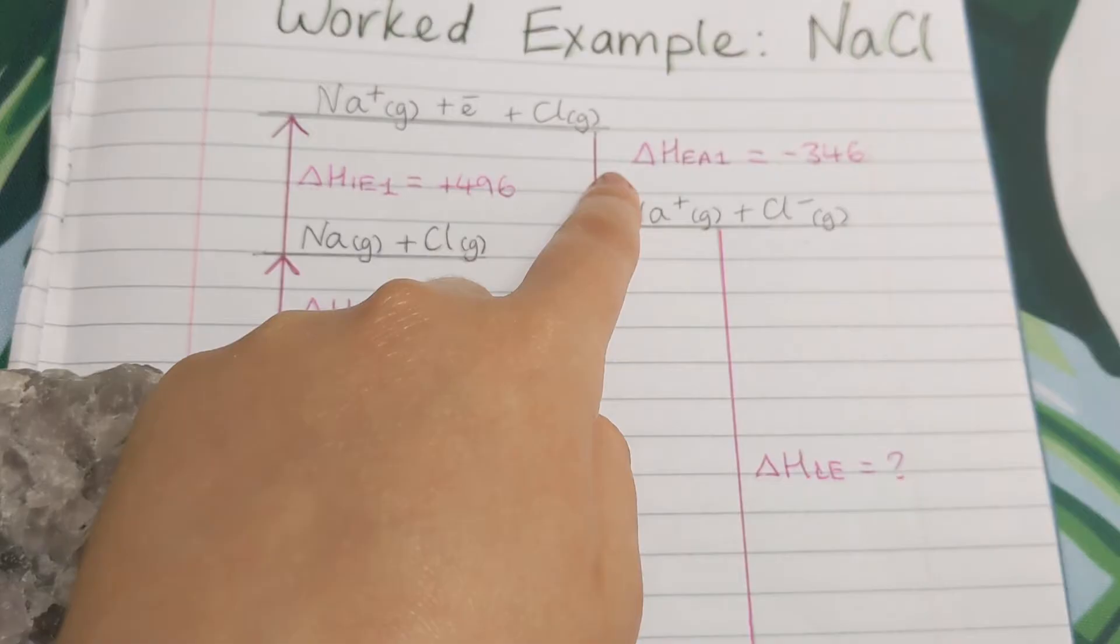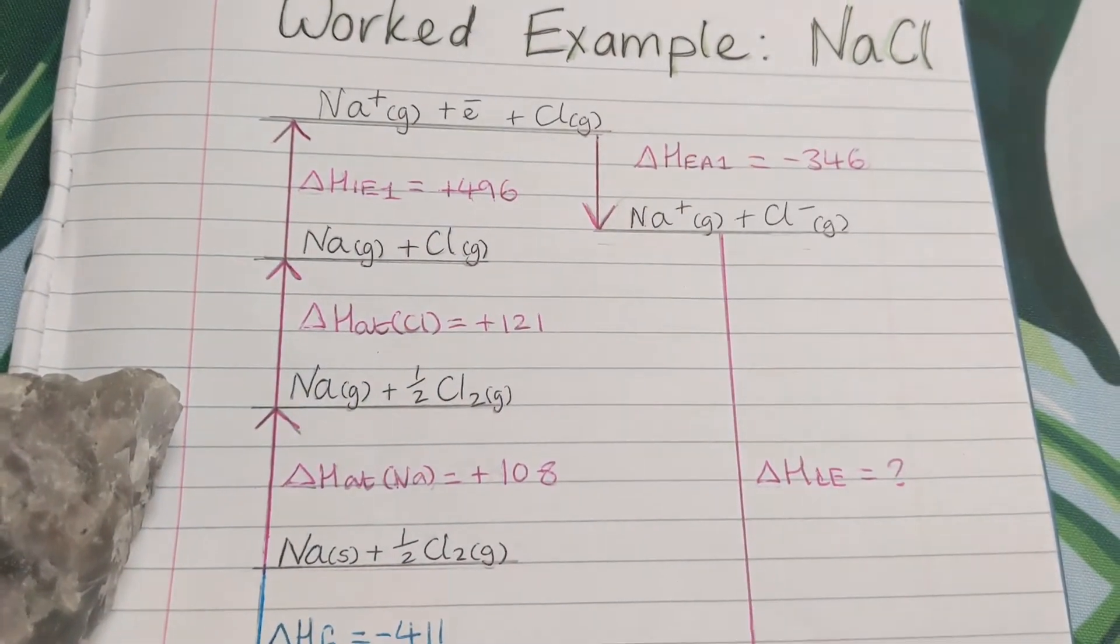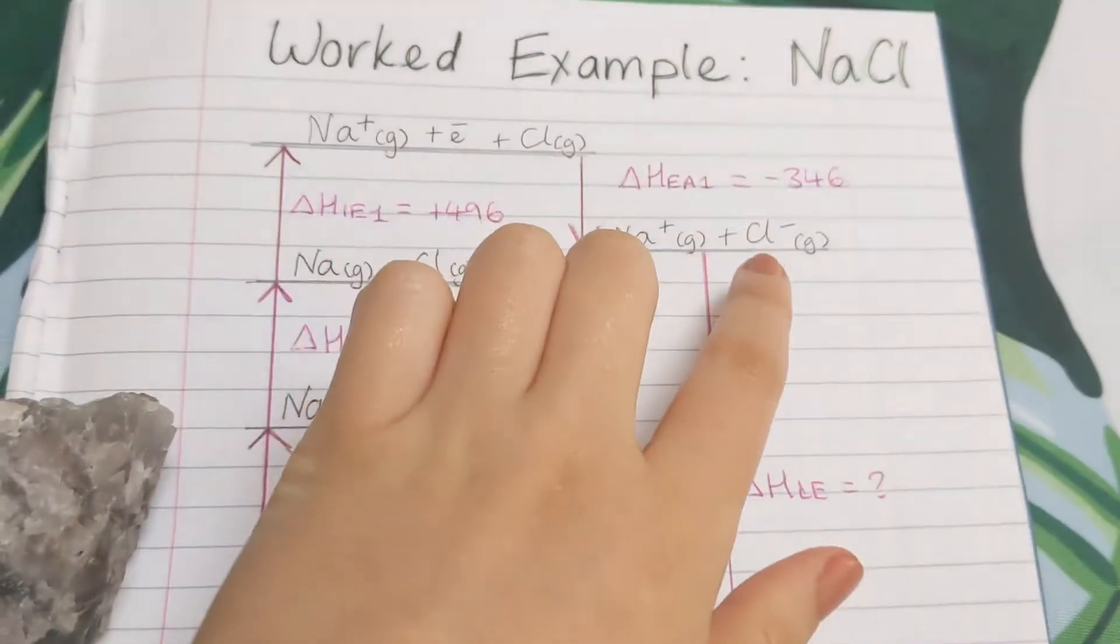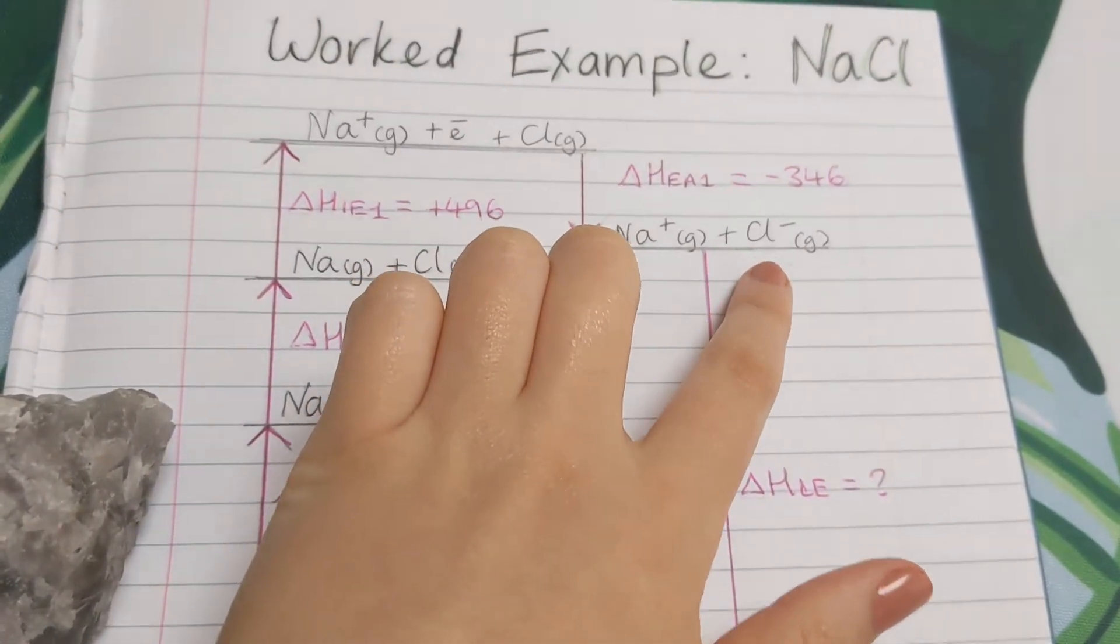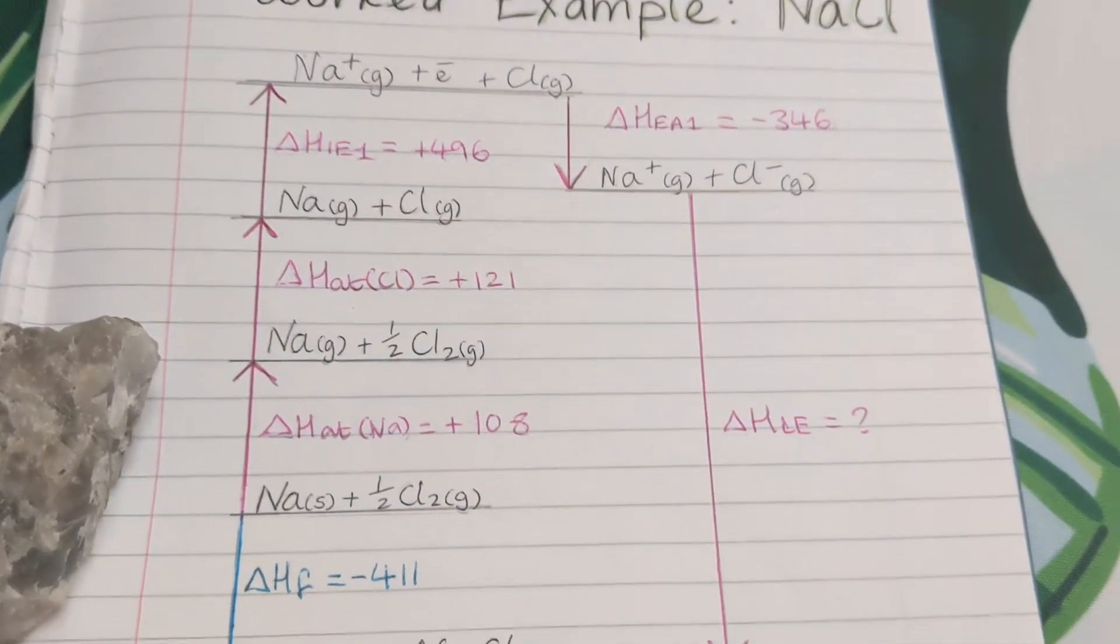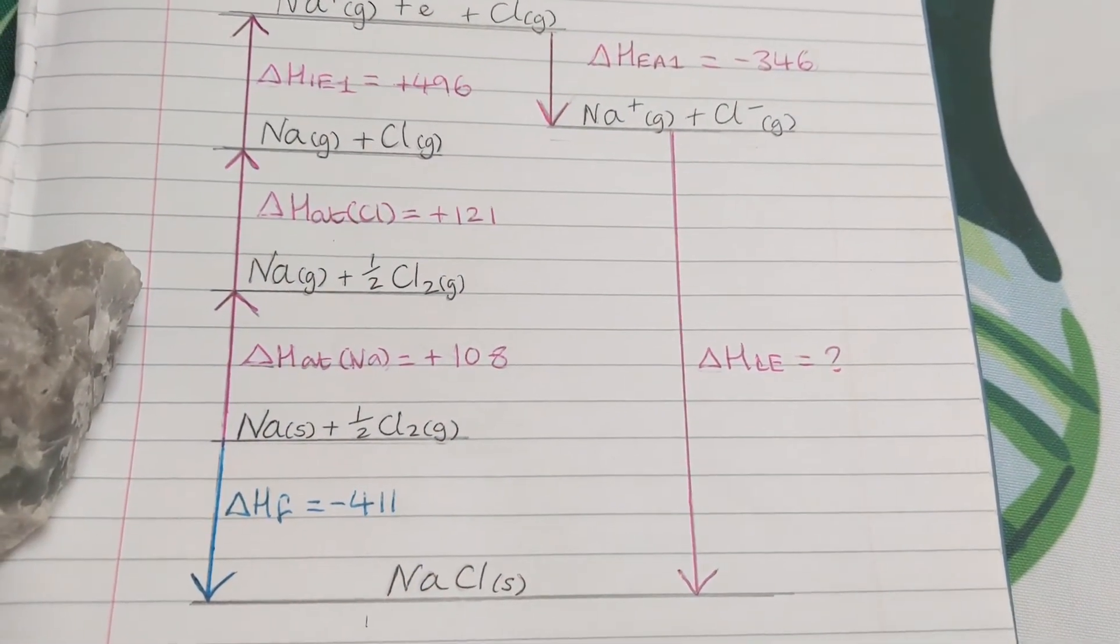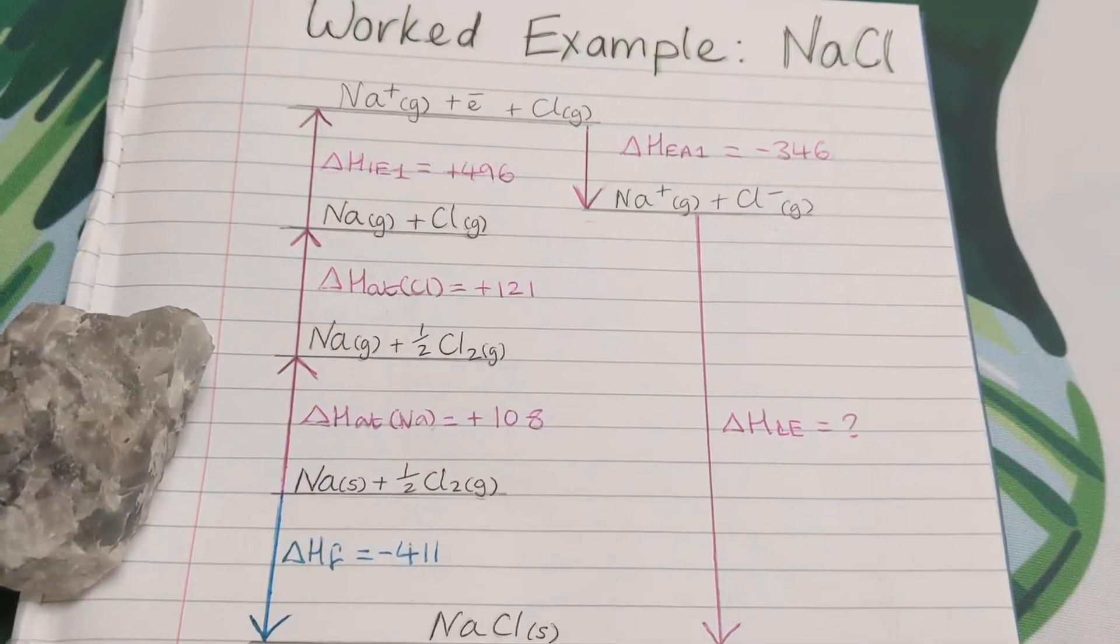After the first ionisation energy of the metal, we have the first electron affinity of the non-metal. So chlorine gas becomes chloride, Cl minus gas. And then the last step going down is lattice enthalpy, which we're going to work out.